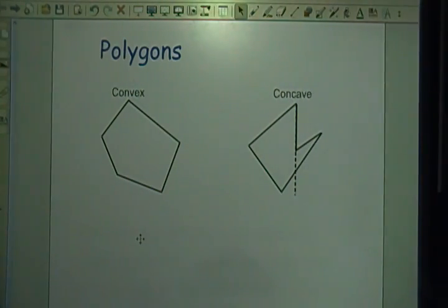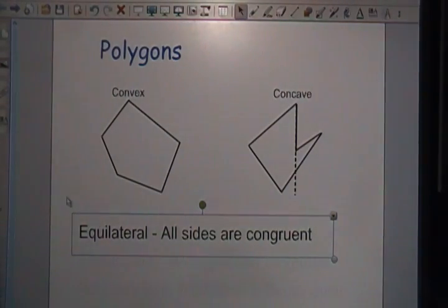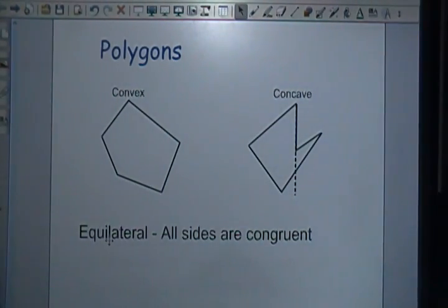Equilateral - well, the first part of that word should remind you of the word equal, and lateral should remind you of sides. So that's all sides are congruent.